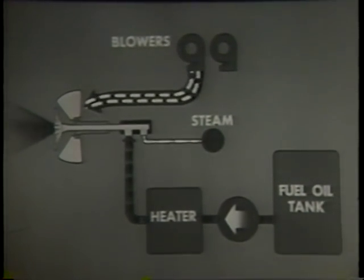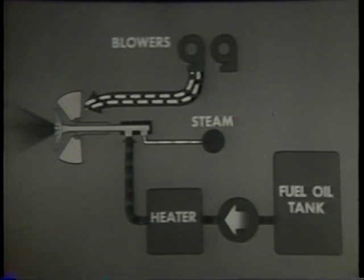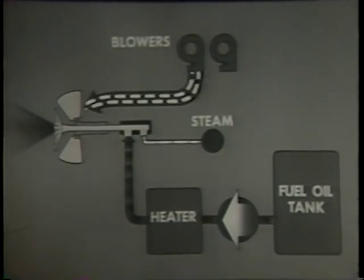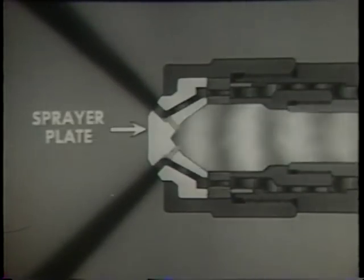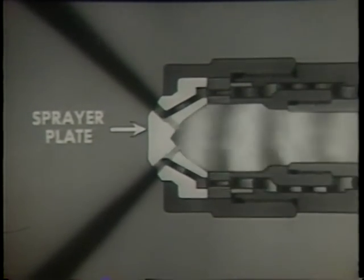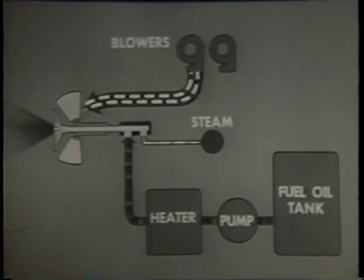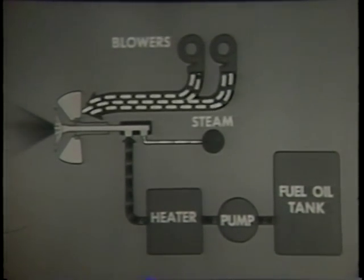Control of the steam atomizing burner involves regulating the air, oil, and steam supply. Regulate oil pressure to control the quantity of oil. When you increase or decrease oil pressure, you must change the steam pressure correspondingly to get good atomization. You must also change the sprayer plate in the burner if the capacity of the plate is incorrect for the new firing rate. As with most burners, you adjust the speed of the blowers and the number in service to control the air supply.